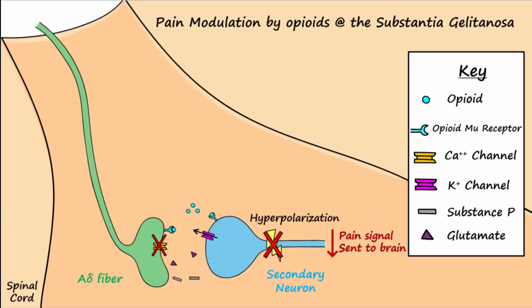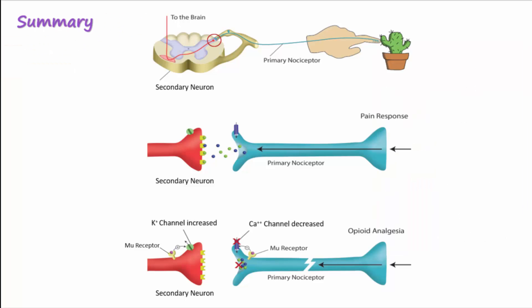So now you can see how opioids, acting as agonists on mu-receptors in the substantia gelatinosa of the spinal cord, leads to a disruption in pain signals, ultimately decreasing the intensity of the painful experience. Here is a diagram summarizing the actions of opioids in the substantia gelatinosa.